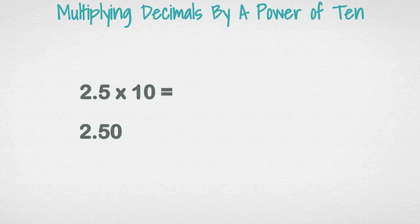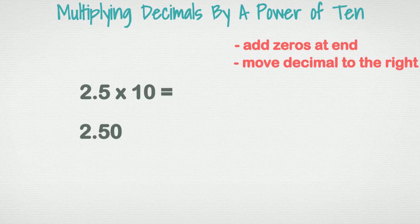Those steps would be: you can add the zeros as you did before, but now you have to move the decimal to the right. Let's walk through a few examples to show this.